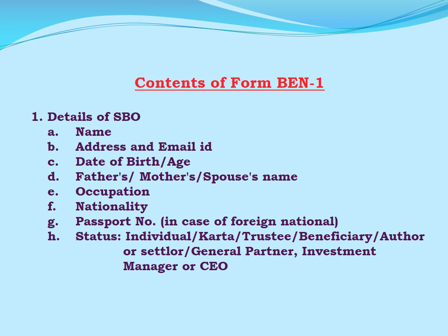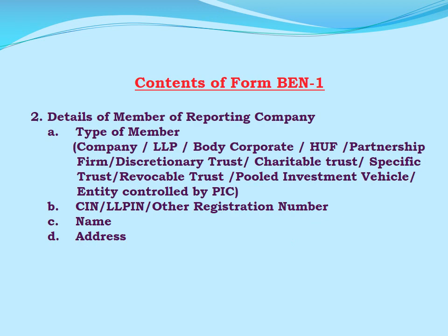What are the contents of form BEN-1? First, details of the significant beneficial owner: in form BEN-1, the significant beneficial owner shall give his name, address, email ID, date of birth or age, father's, mother's, or spouse's name, occupation, nationality, and in case of a foreign national, passport number. They shall also indicate whether they are an individual trustee, beneficiary, or author or settler of a trust, or in case of an investment agency, whether they are a general partner, investment manager, or CEO of the said investing agency.